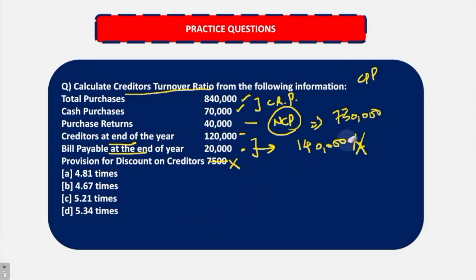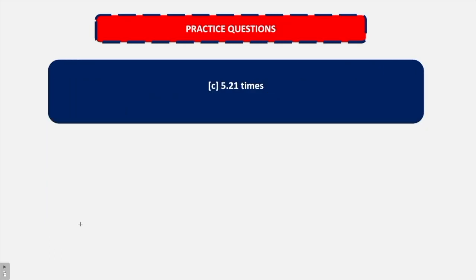We are just going to use the values of creditors at the end of the year and BP at the end of the year, which is 1,40,000. When we divide this, we come to the answer that is 5.21 times. So the answer is C, 5.21 times.